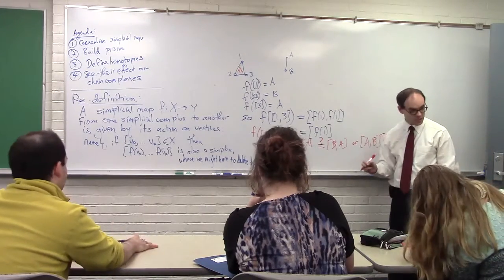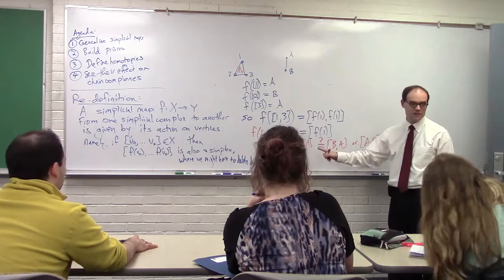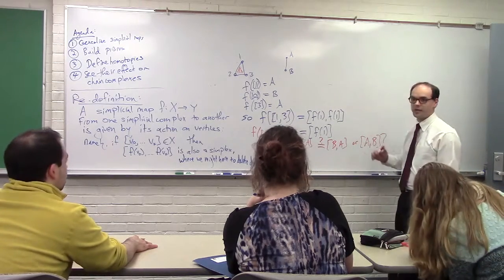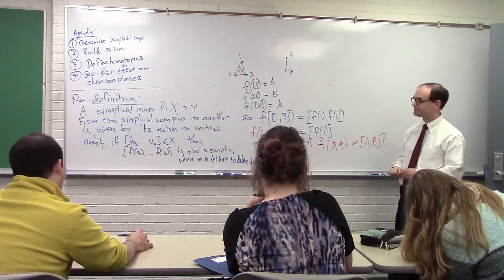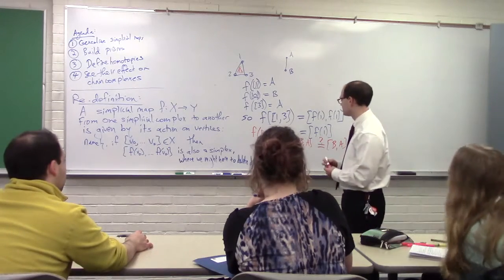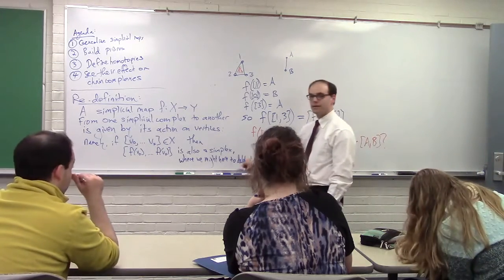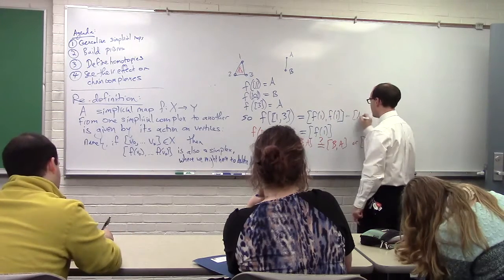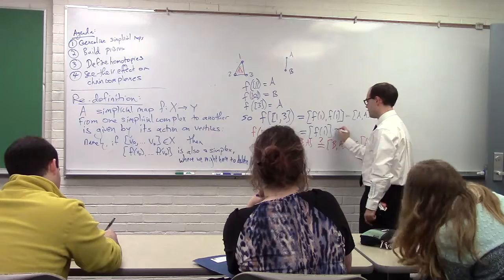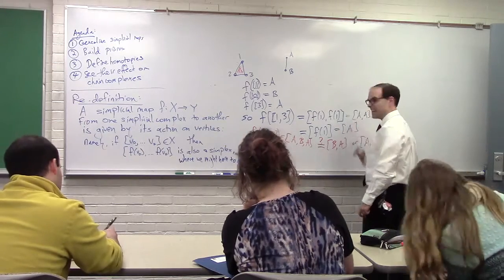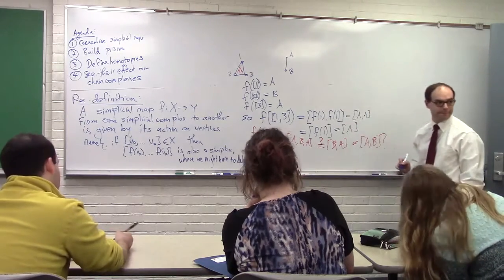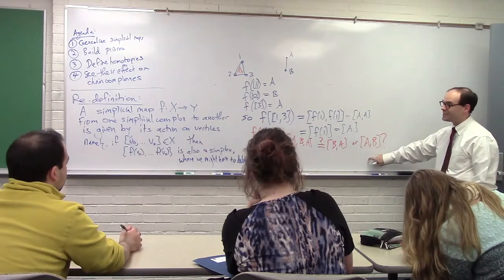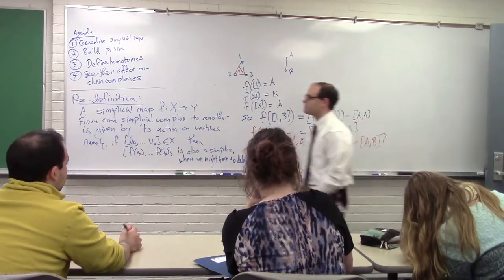Personal convention: when I do this, I retain the first of each one that I see, and throw away any duplicate elements. So f of {1,3} equals f(1) = a, f(3) = a, so it's just a — a simplex collapsed to a vertex. This throws a monkey wrench potentially in the chain map definition.